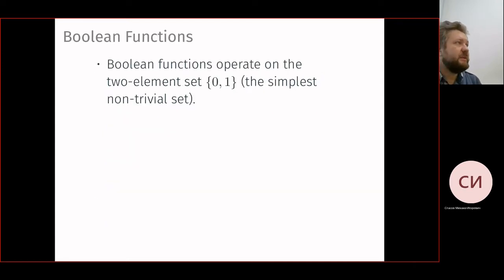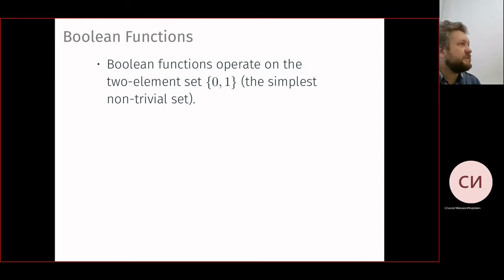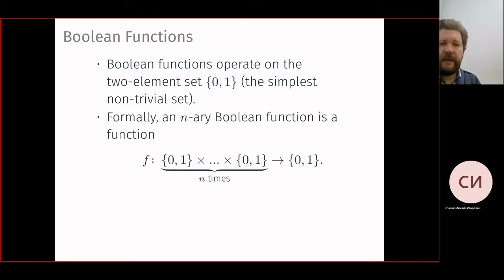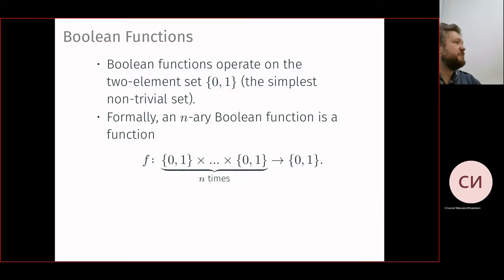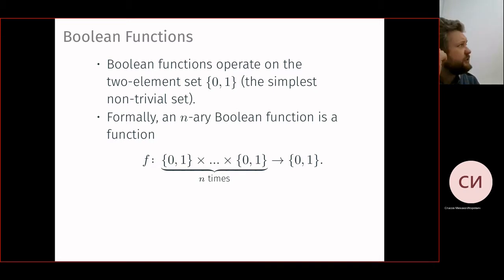Most of you have heard something about Boolean functions or classical propositional logic. Boolean functions operate on the simplest non-trivial set: zero and one. Functions can have several arguments, so it's not just one bit — you can have a string of bits. Anything in a computer is finally encoded by zeros and ones. Formally, an n-ary Boolean function is a function from n Boolean arguments to one Boolean argument.